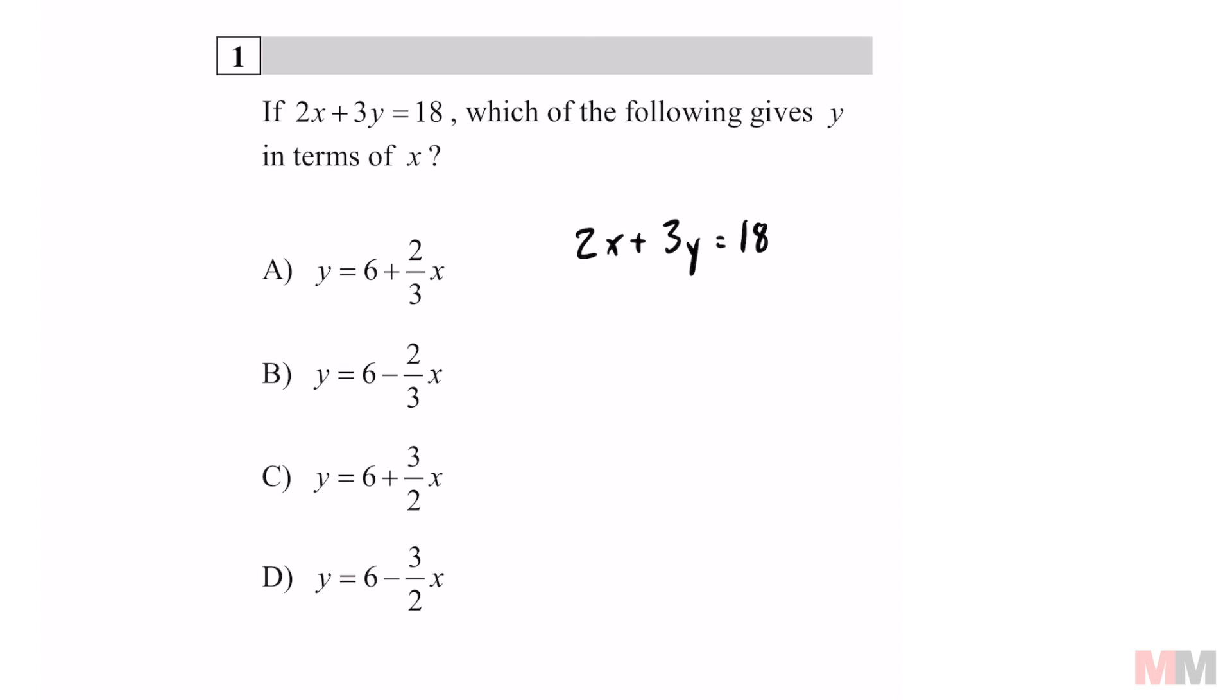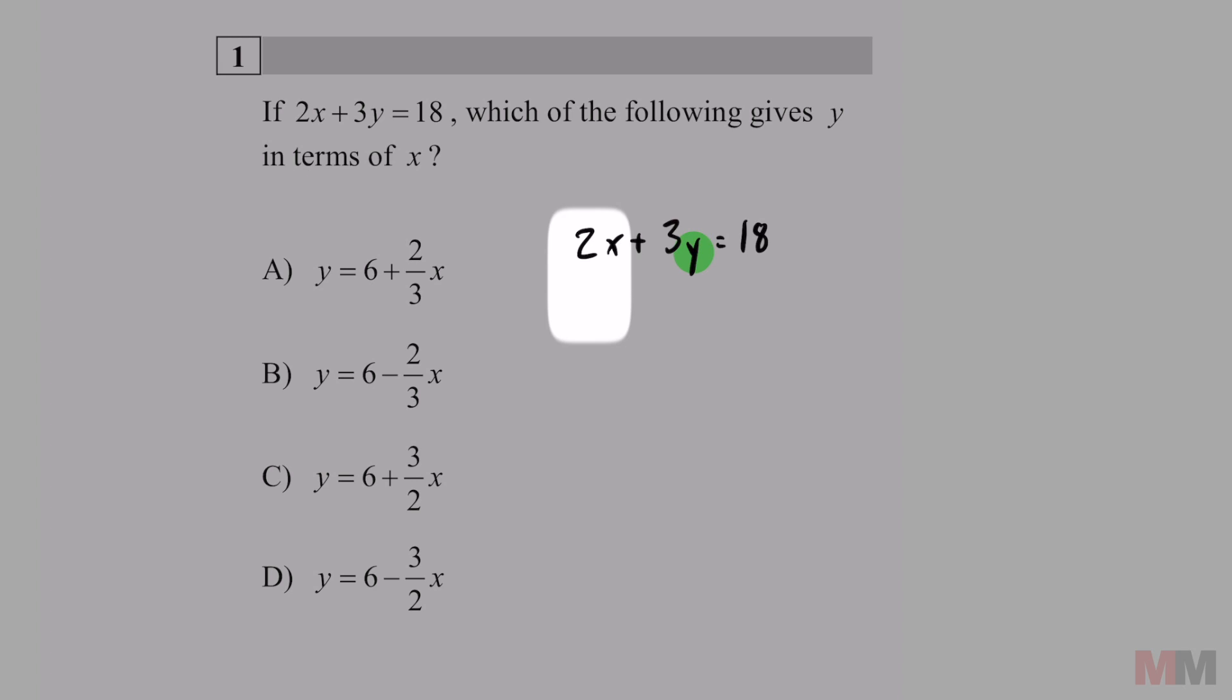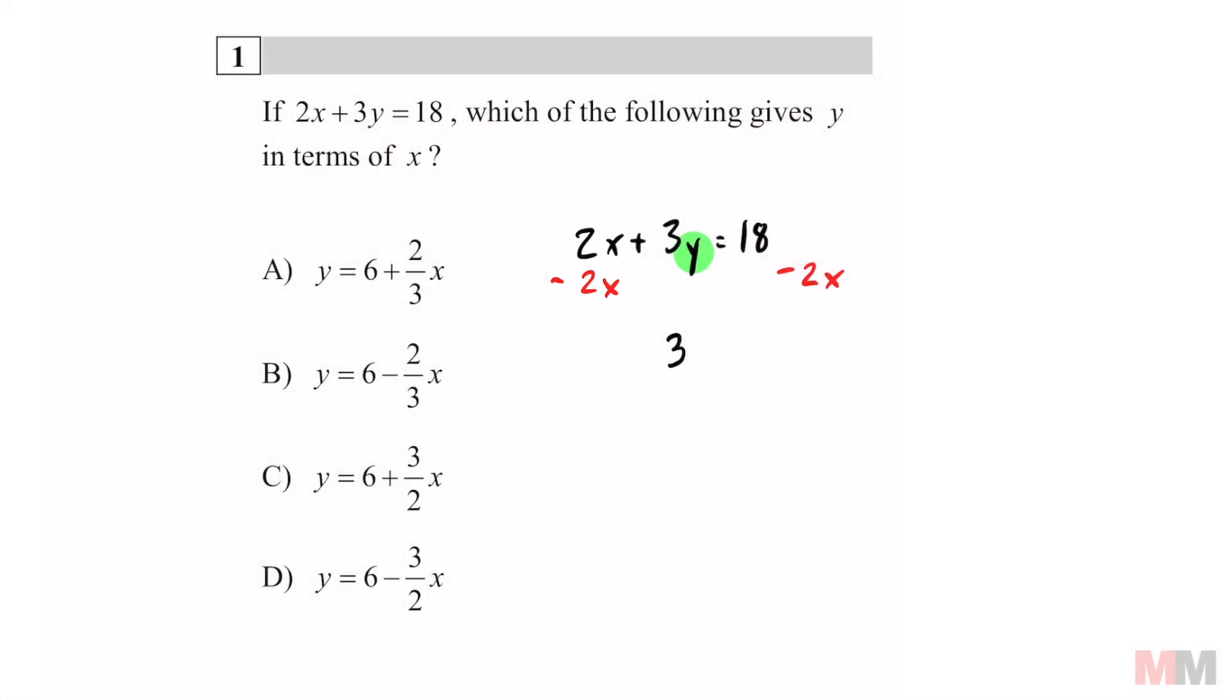So if you want y by itself, don't touch the letter y and you want to get rid of that 2x first. That's a positive 2x, so you just get rid of it by subtracting by 2x. That's going to leave you with 3y equals 18 minus 2x.